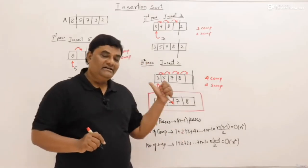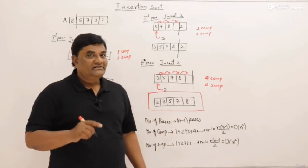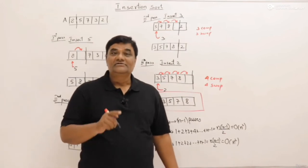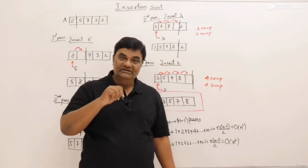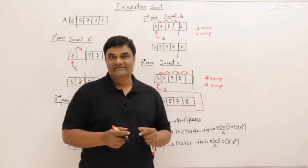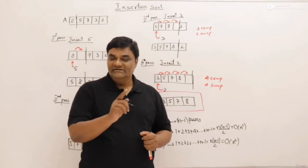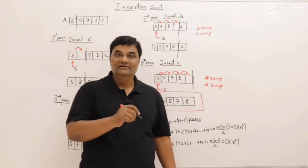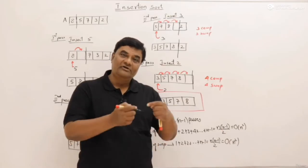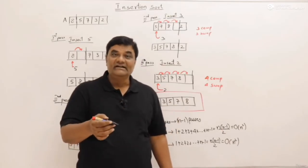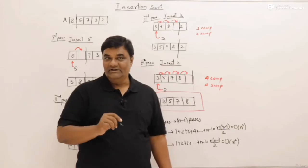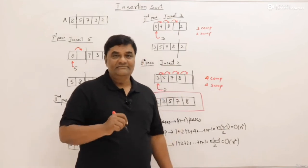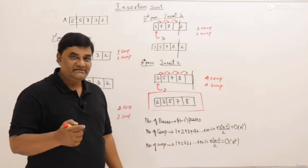The second important thing: we have seen insertion in an array as well as in a linked list. In an array we have to shift elements, but in a linked list we don't have to shift anything. The benefit of insertion sort on a linked list is that you can insert without shifting. So insertion sort is more compatible with a linked list than an array — in fact, insertion sort is designed for linked lists. For sorting a linked list, insertion sort is better.